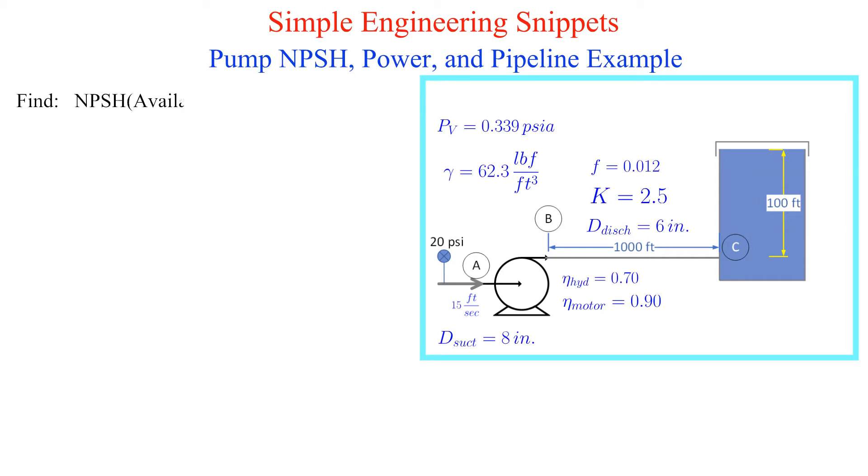Let's start with finding the net positive suction head available. Net positive suction head is the difference between the absolute stagnation head at the pump suction and the vapor head. We are provided everything to calculate the absolute stagnation head at the pump suction.